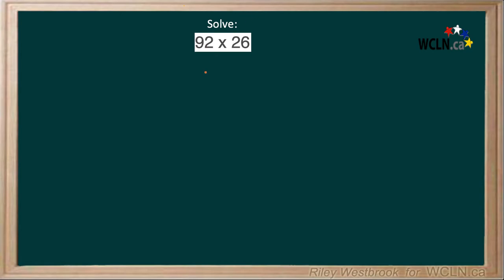This question is asking you to multiply 92 and 26. Now when we multiply, we always start from the right-hand side.